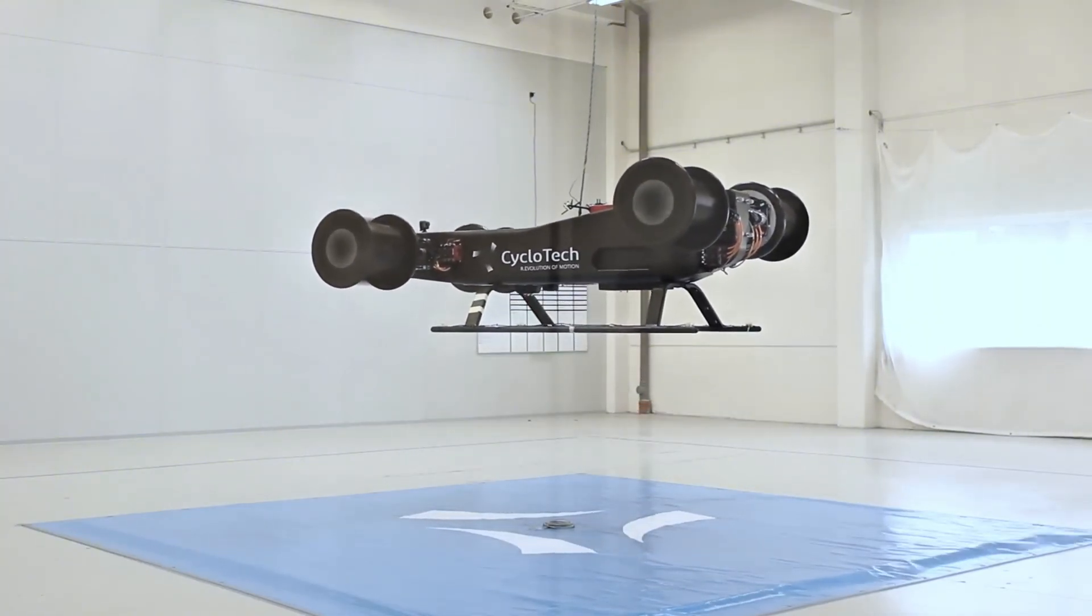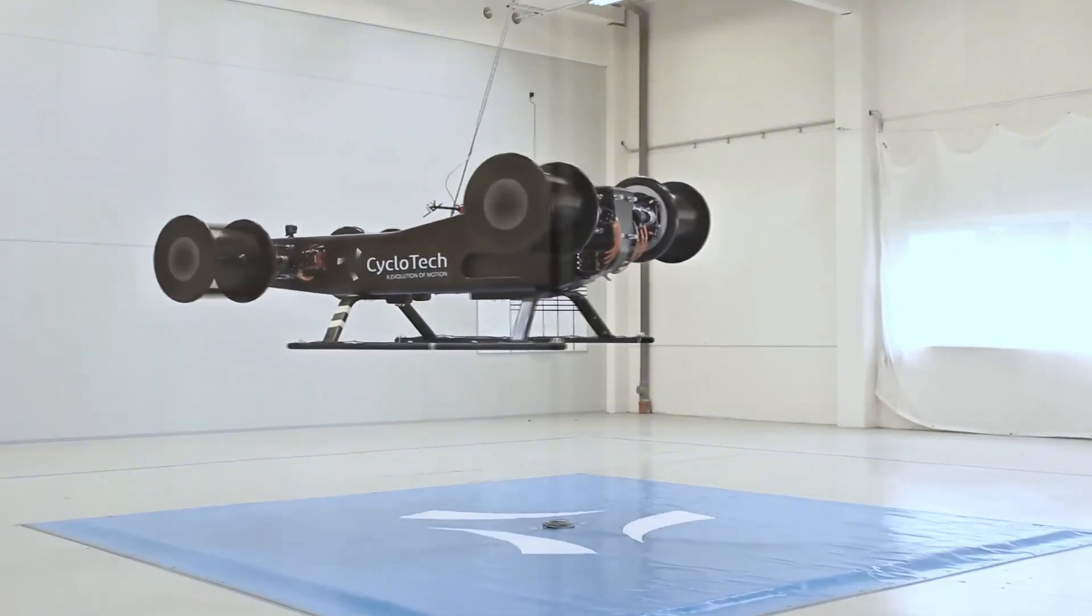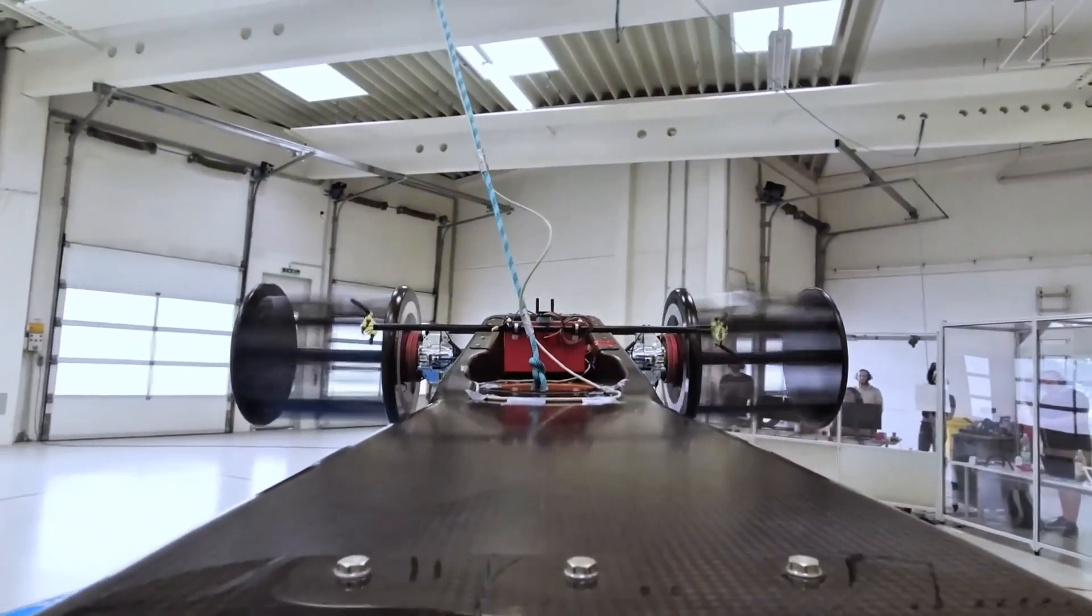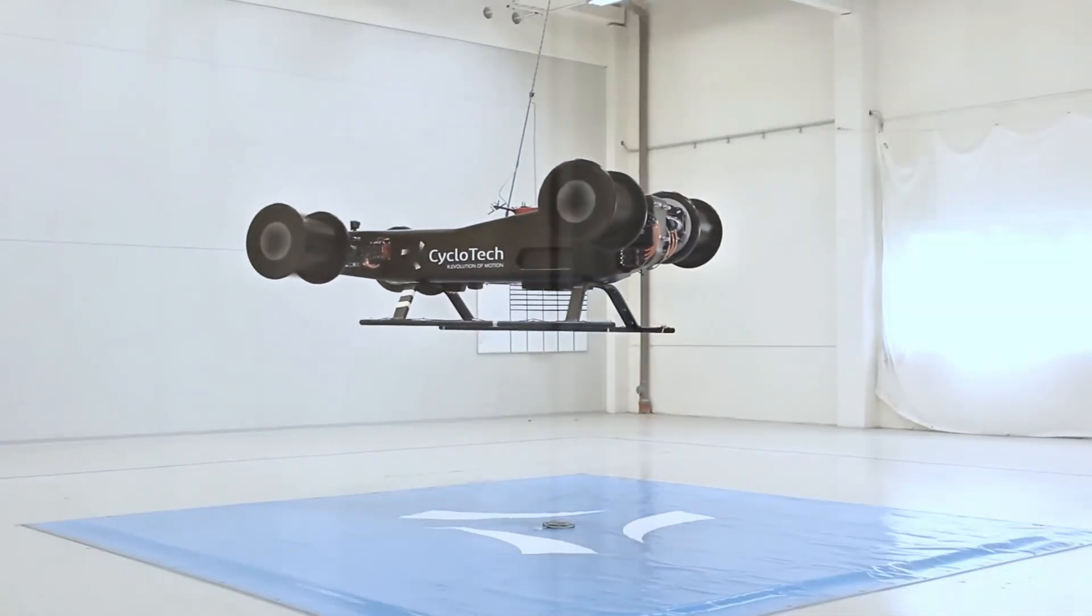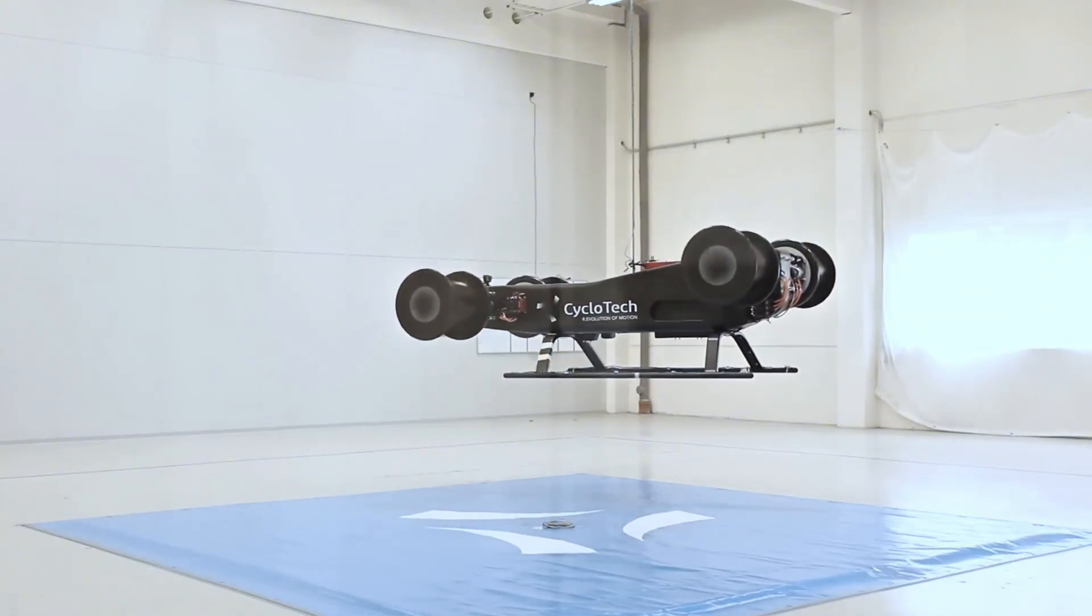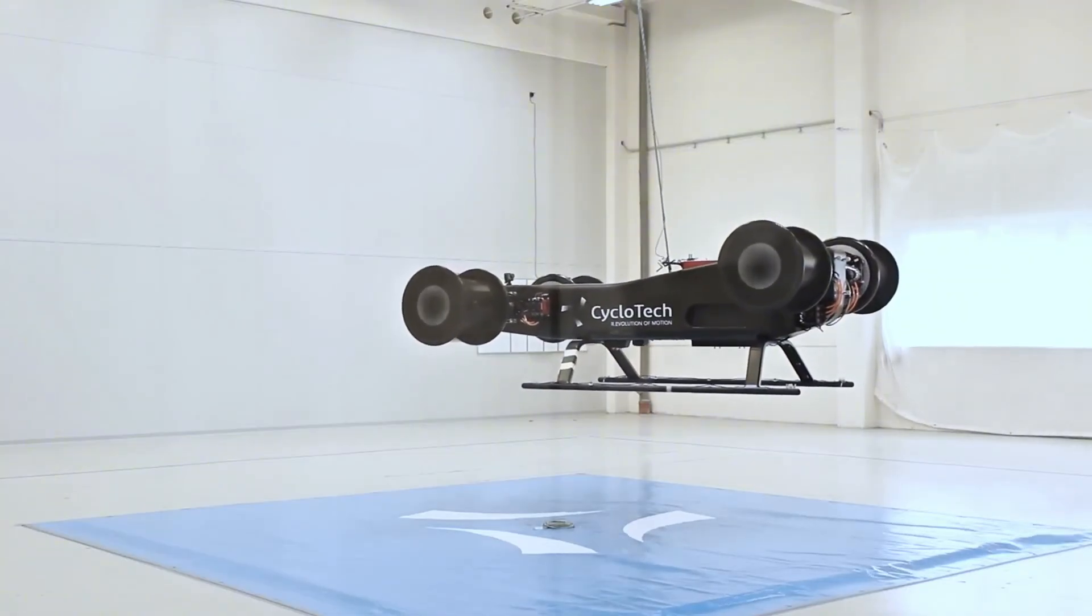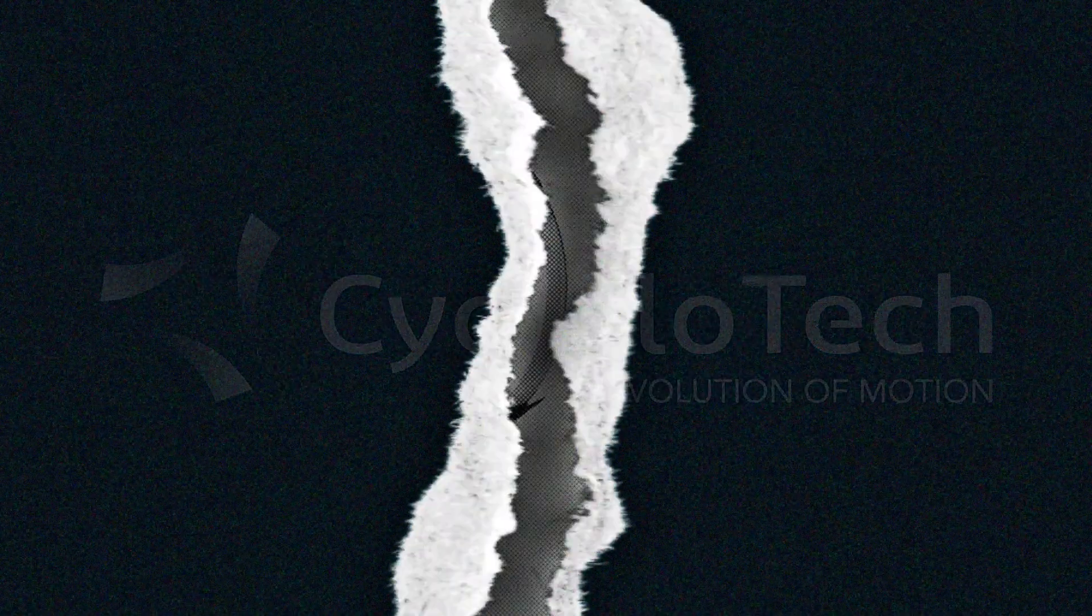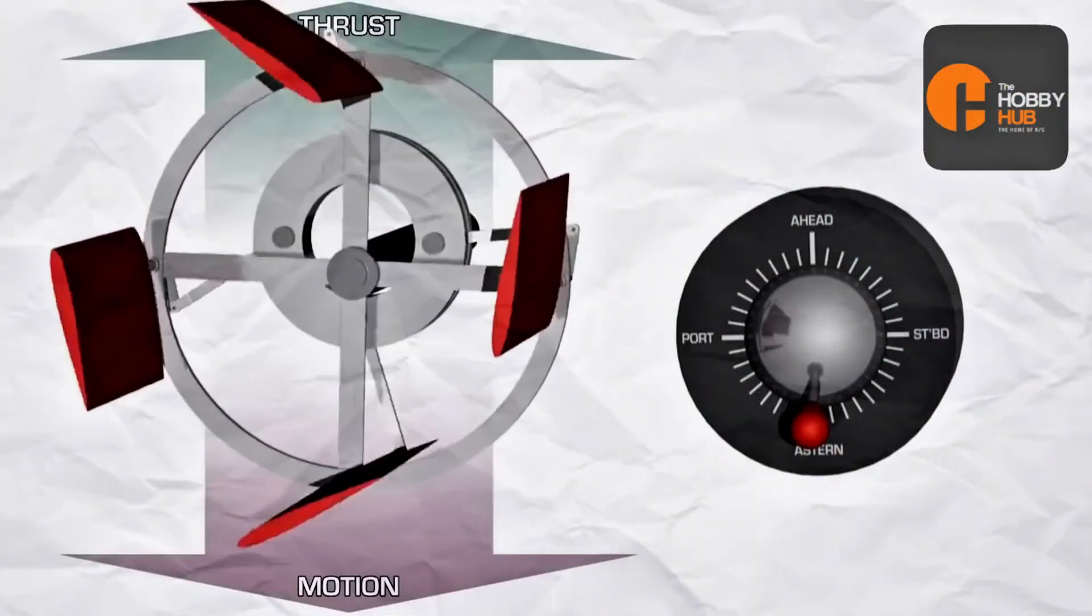Now, with powerful electric motors and computers, things are changing. A company called Cyclotech in Austria is building an EVTOL prototype, nicknamed the Blackbird. Instead of normal propellers, it has six cyclorotors – drum-shaped thrusters that tilt thrust instantly. That lets the Blackbird hover like a helicopter, zip forward like an airplane, and even strafe sideways smoothly. They even say it can parallel park in midair like a car in the sky.